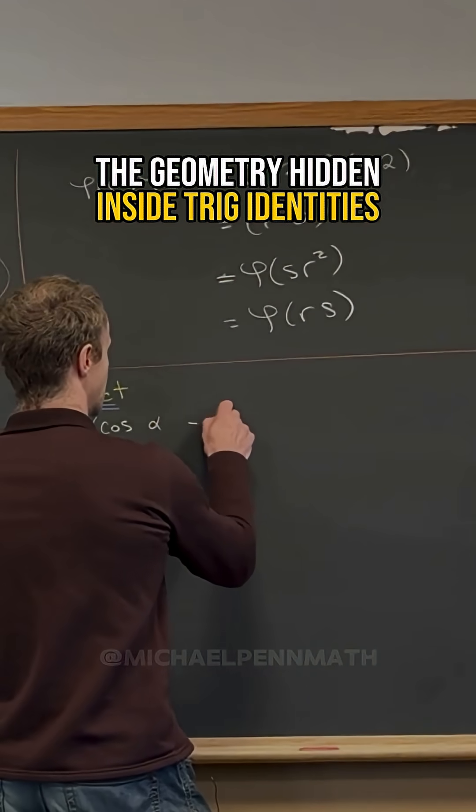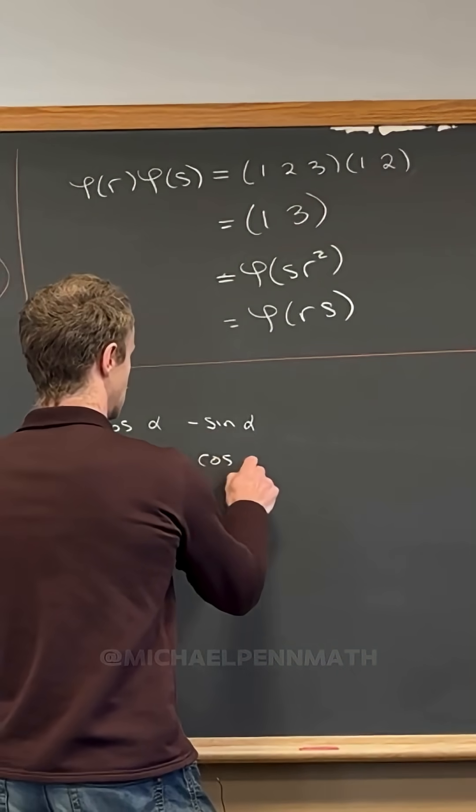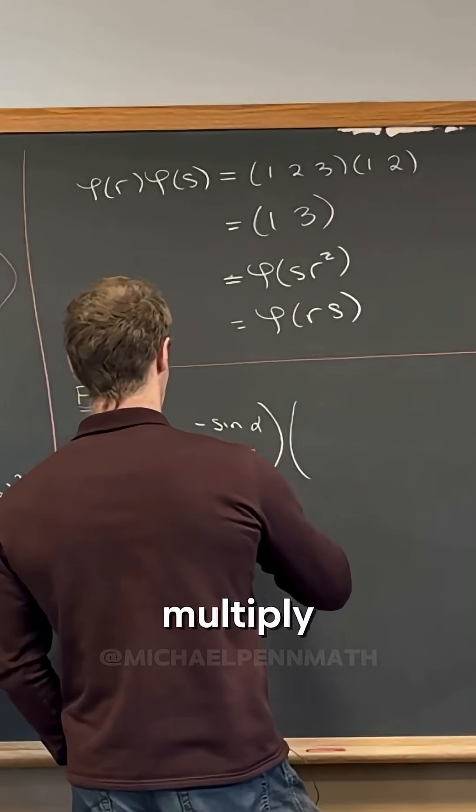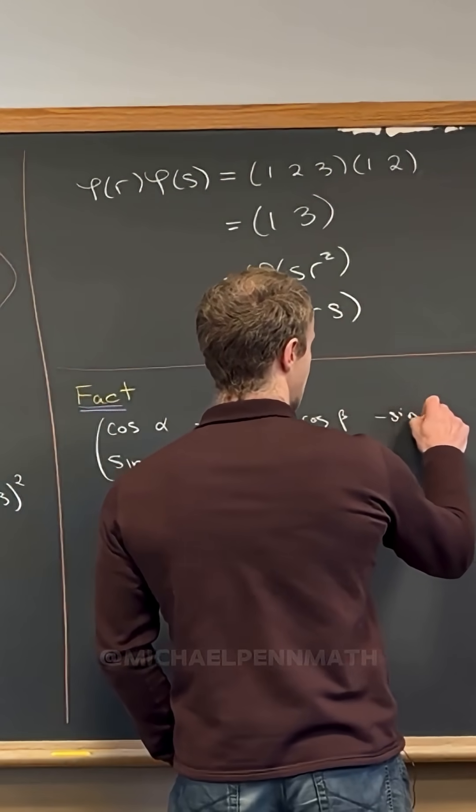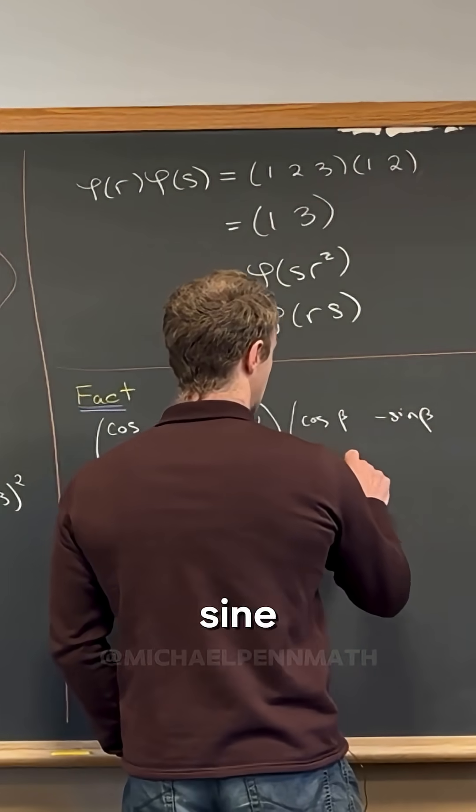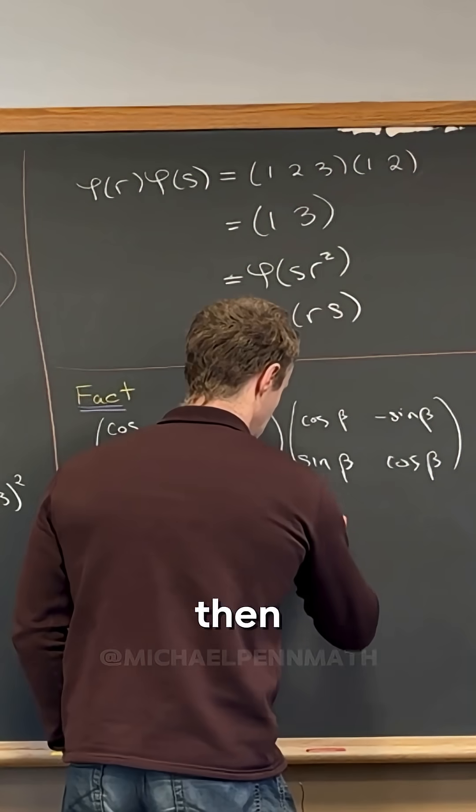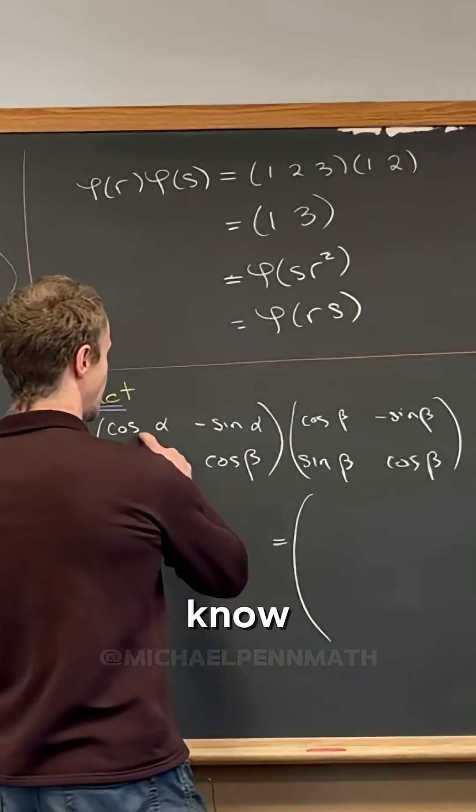If you take cosine of alpha minus sine of alpha, if you take this matrix, so if you take that matrix right there and you multiply it into this matrix right here: cosine beta minus sine of beta, sine of beta, cosine of beta. Then by rules of matrix multiplication, we know that this entry...